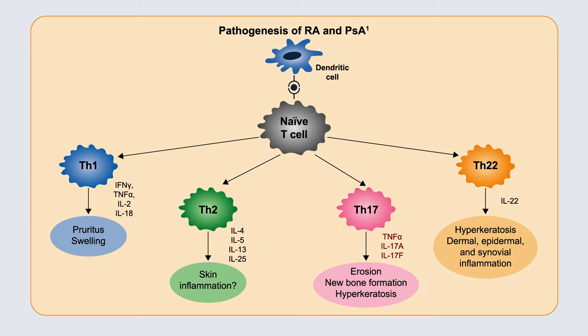In RA, while there is upregulation of Th17 pathways, targeted therapy to IL-17 has not been nearly as successful and is not approved for therapy. Th22 is intimately involved with Th17 cell pathways and can be seen to be perturbed in both sets of disorders. Regulatory T cells, which are peripheral maintainers of self-tolerance, appear to be compromised in both conditions, though the clinical significance of this is far from clear.